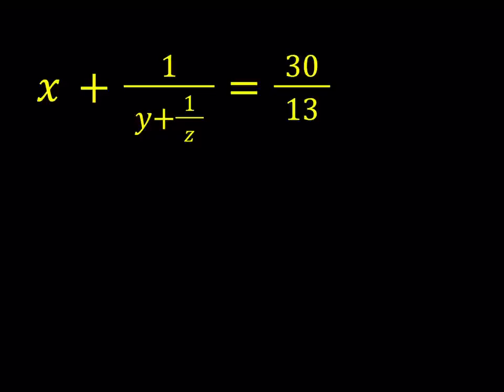Hello everyone, in this video we're going to be solving an equation for integers. We have x plus 1 over the quantity y plus 1 over z is equal to 30 over 13, and x, y, and z are integers.